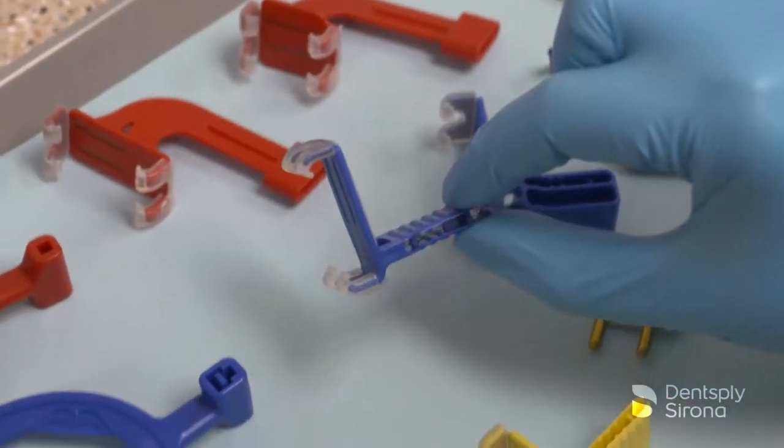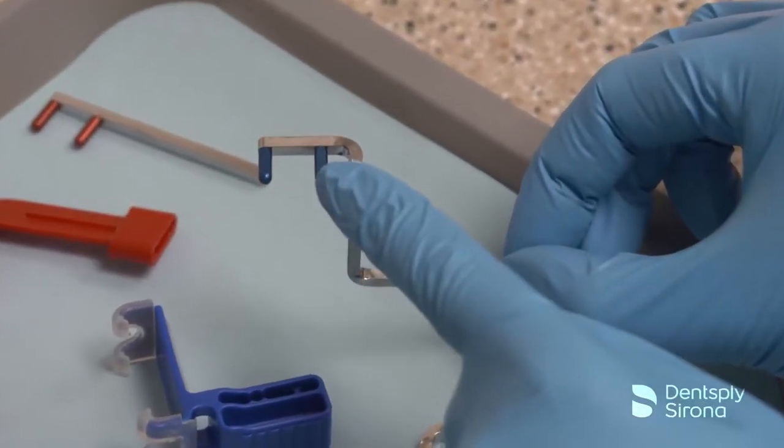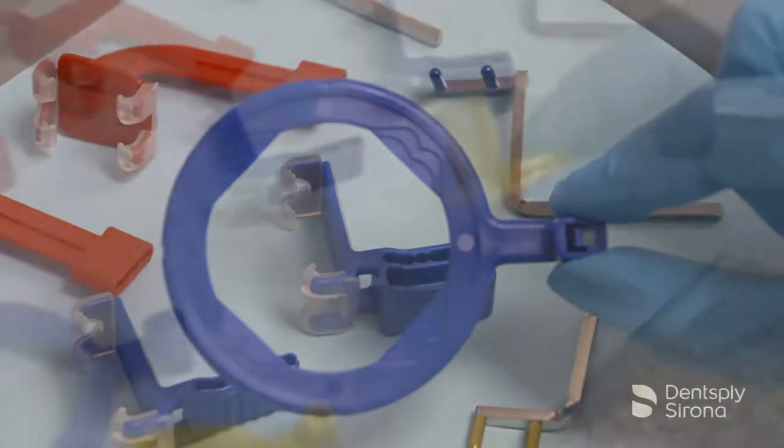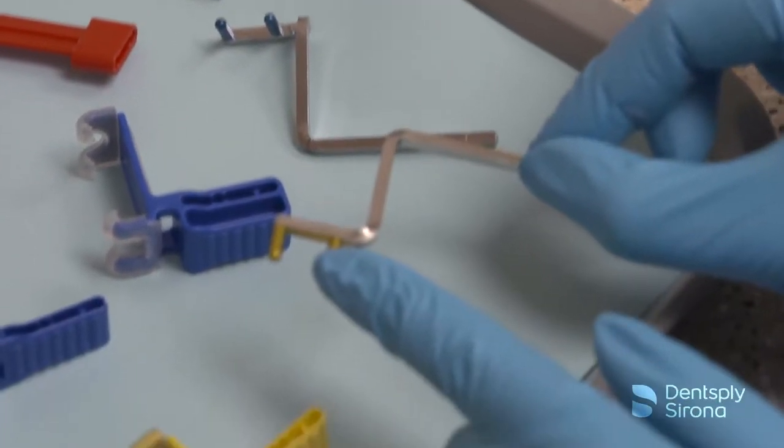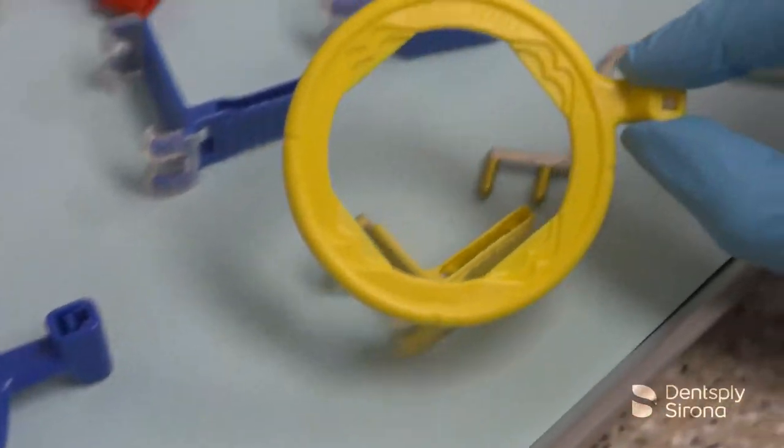The blue bite blocks correspond with the metal arm with the blue pegs and the blue ring. The yellow bite block is for posterior periapical radiographs and corresponds with the metal arm with the yellow pegs and the yellow ring.